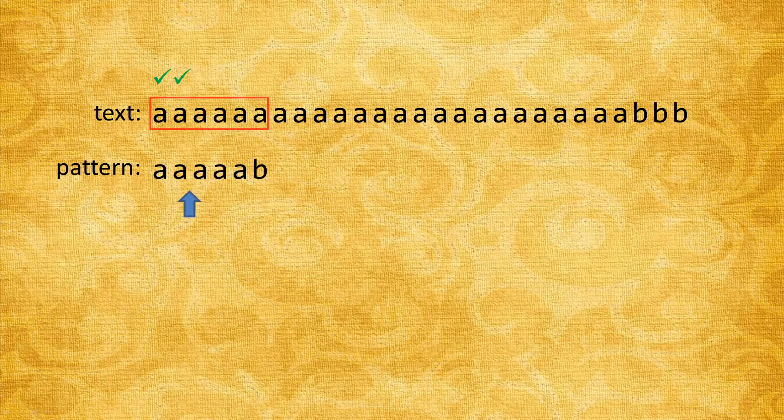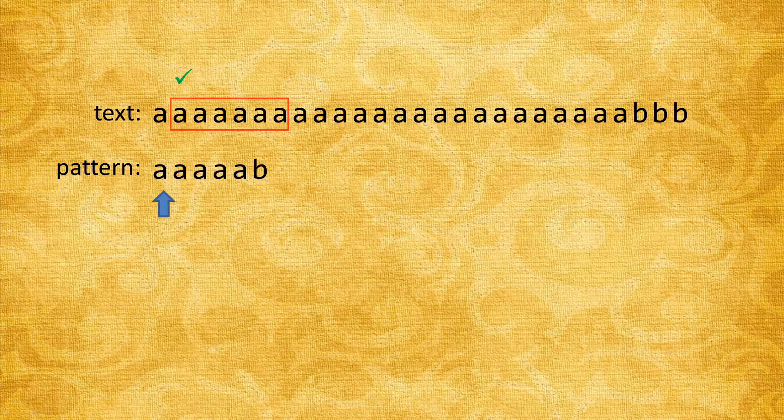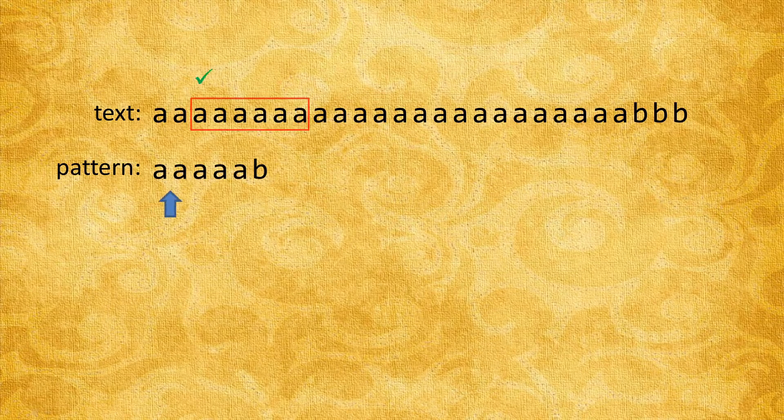Suppose we have some long text and we want to find out if our pattern string is in this text. The brute force way of doing this would be to compare the first character of the two strings. If it matches, then compare the second character and so on until either all the characters match or there's a mismatch. In case of a mismatch, the sliding window is moved down one while the pattern string pointer is reset back to the first character and the process repeats. This is painfully inefficient, in particular when the pattern string is long and the mismatch happens towards its end.